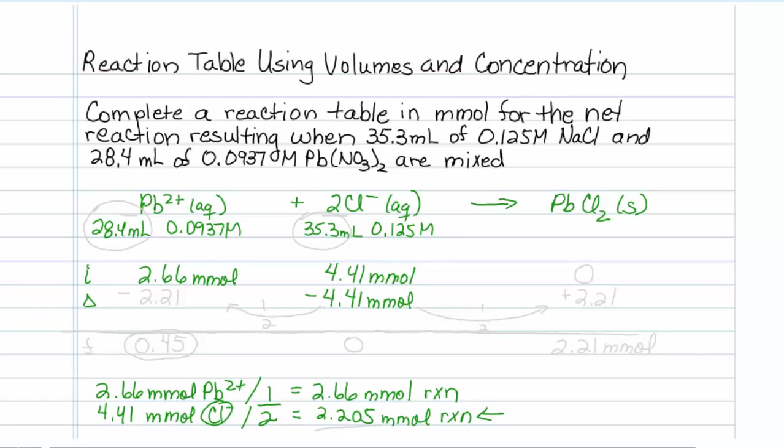Now to figure out how much to subtract for the other materials or add, remember that we divide by the coefficient. The ratio of lead to chloride is 1 to 2,